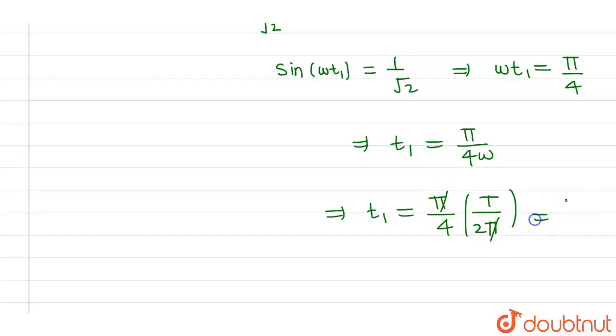Now here pi will cancel out, and overall I can say that time taken by particle to move from x equals 0 to A by root 2 is T by 8.